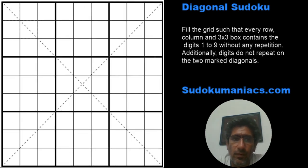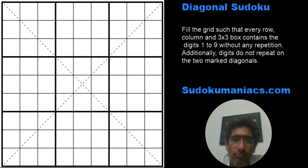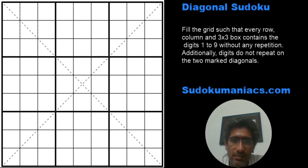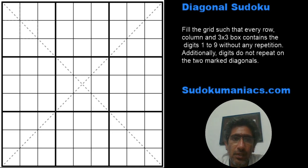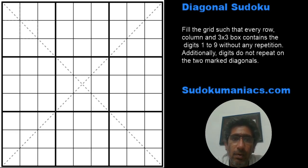Hey guys, welcome back to Sudoku Maniacs. Earlier today I gave out a diagonal Sudoku puzzle for you to solve and see how well you fare. I did receive a great response with varied solving times. The ones who are already experts were able to crack it within 5 minutes, but quite a few people took around 10 minutes or more. This video is basically to guide them on how to solve a diagonal Sudoku faster — the tips and tricks we use as professional solvers in a competitive environment.